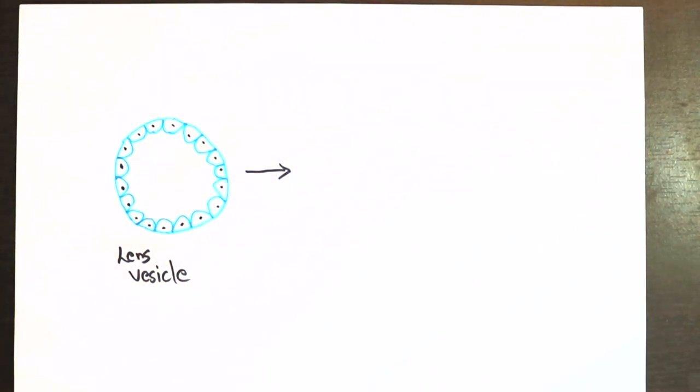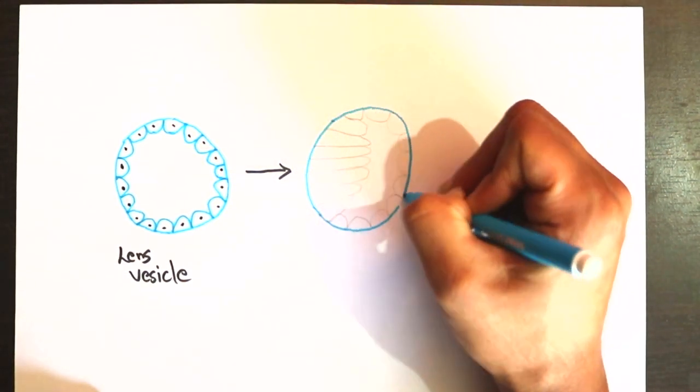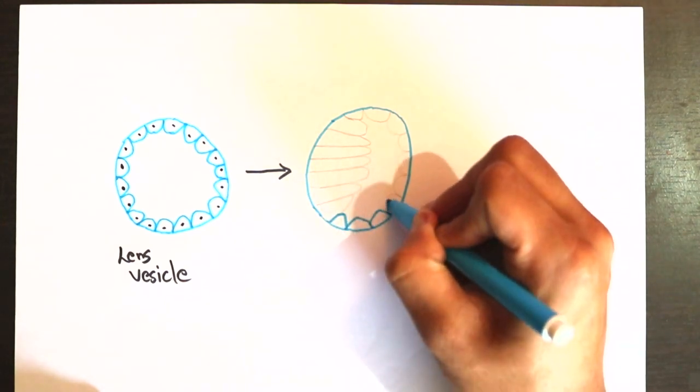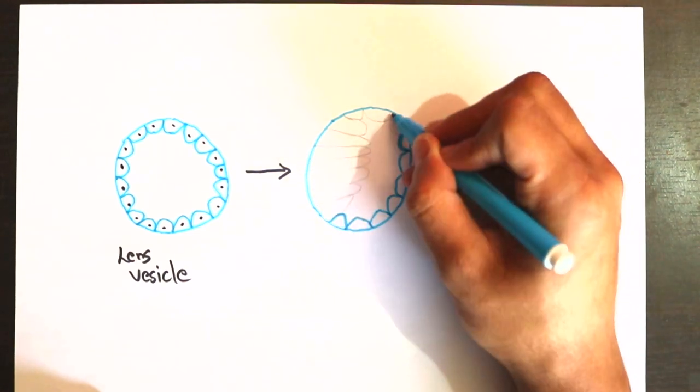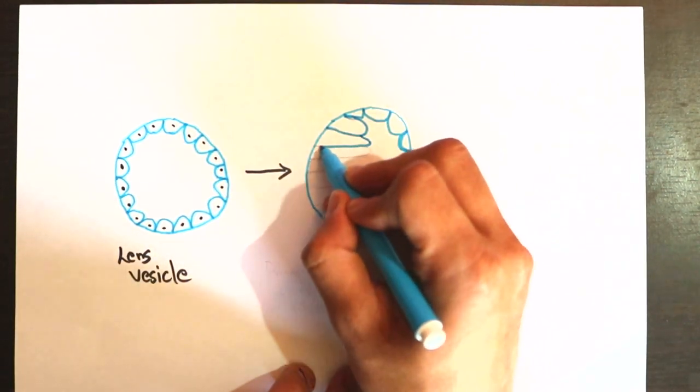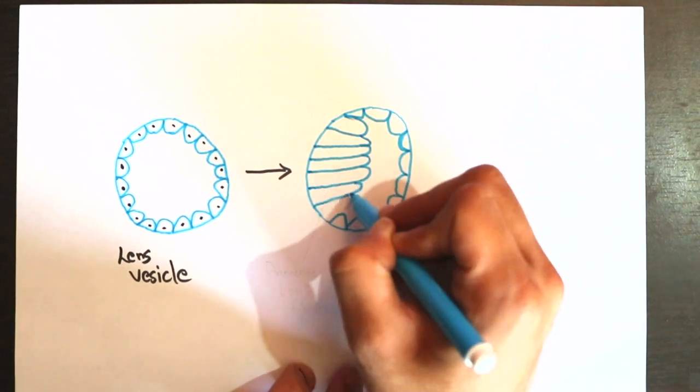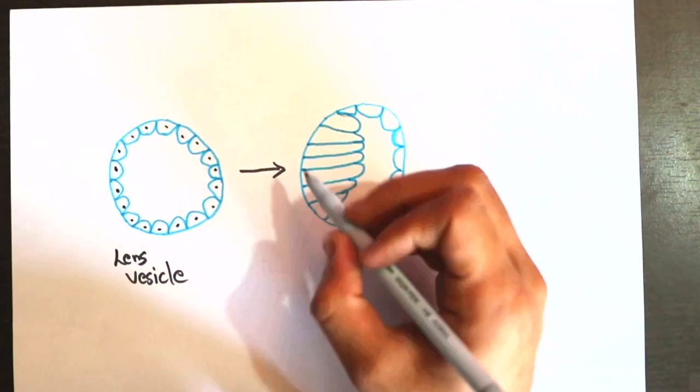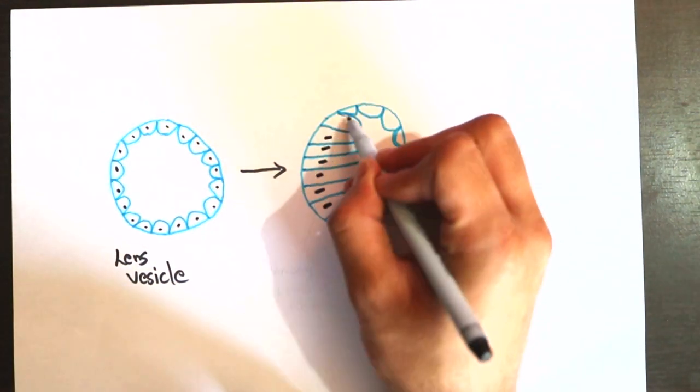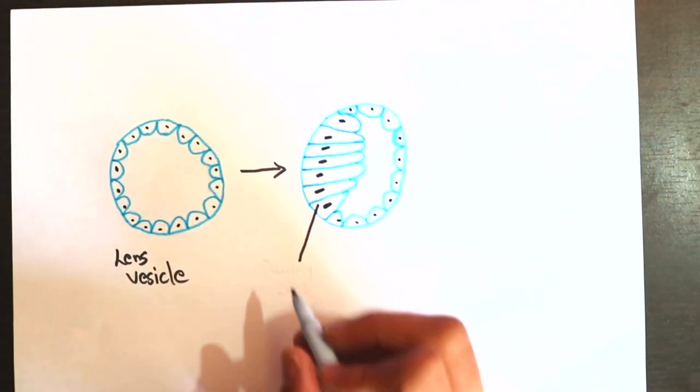The developing neural retina signals the cells closest to the posterior end of the lens vesicle to elongate towards the anterior end of the vesicle. These cells are called primary lens fibers. The signals from the neural retina also induce the synthesis of crystallins.